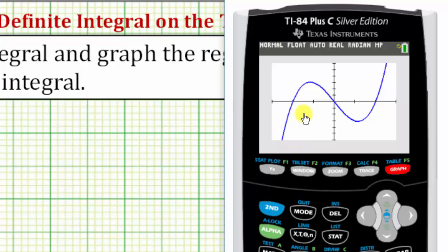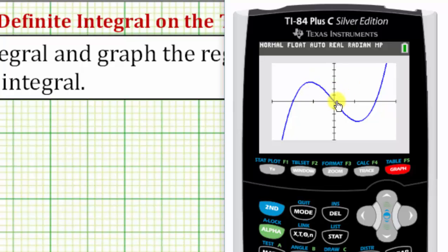We now have a nice view of the function over the closed interval from negative two to two. Notice how if we integrated from negative two to zero the definite integral would be positive, but when we integrate from zero to positive two, because the function is below the x-axis, the value of the definite integral would be negative.